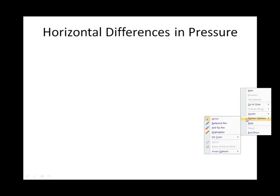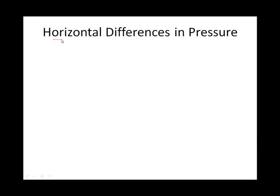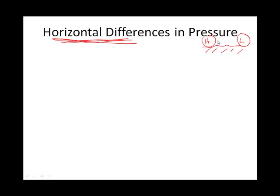We are switching gears from looking at a vertical difference in pressure to a horizontal difference in pressure. We'll come back to the vertical difference in a little bit. So horizontal differences in pressure — if this is the Earth's surface, we're talking about some sort of high pressure over here and some sort of low pressure over here. The reason we're so concerned about pressures is that's what creates our movement of air, which we call wind.